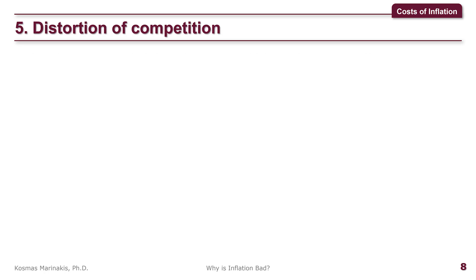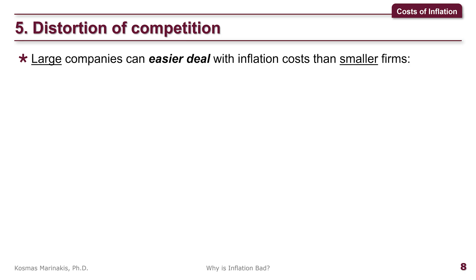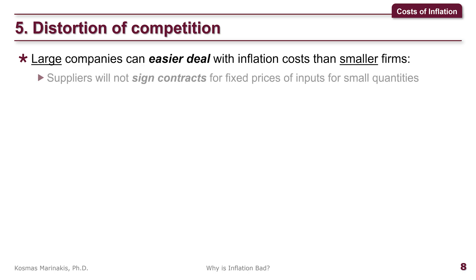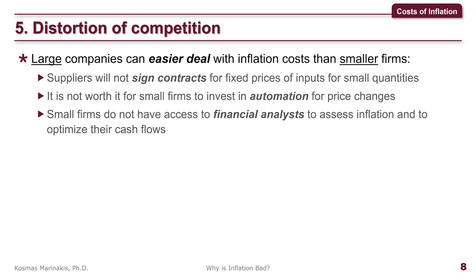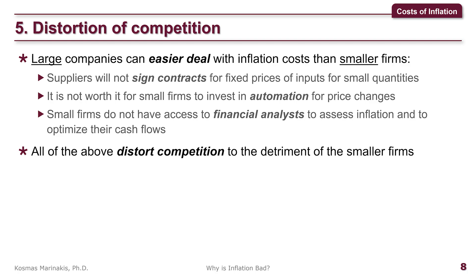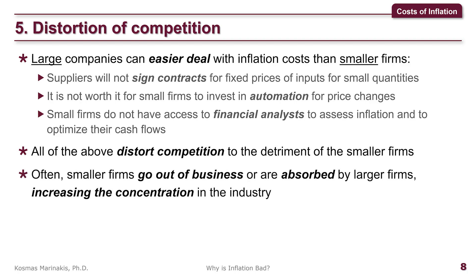Inflation also distorts competition. Large companies can more easily deal with the costs of inflation than smaller firms. For example, suppliers will not bother signing contracts for fixed prices of inputs for the small quantities that smaller firms usually buy. Also, it is not worth for smaller firms to invest in automation for price changes because they do not have the volume of sales to cover such fixed costs. Smaller firms also lack access to financial analysts to assess inflation or optimize their cash flows, so they end up holding more cash than optimal and lose value. All of this distorts competition to the detriment of smaller firms, which often results in smaller firms going out of business or being absorbed by larger firms, increasing concentration in the industry.